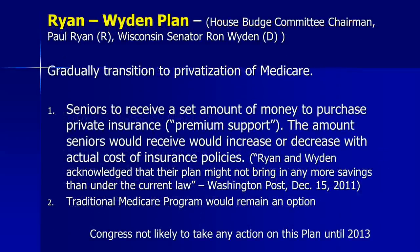The Ryan-Wyden Plan involves the gradual transition to privatization of Medicare, where seniors would receive a set amount — known as premium support — to purchase private insurance, with that amount increasing or decreasing with actual insurance costs. Ryan and Wyden acknowledged that the plan might not result in any more savings than under current law, and the premium support comes from taxpayer funds. Any replacement for the SGR is not likely to be considered by Congress until 2013.